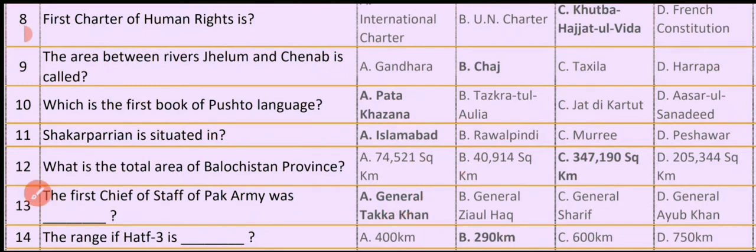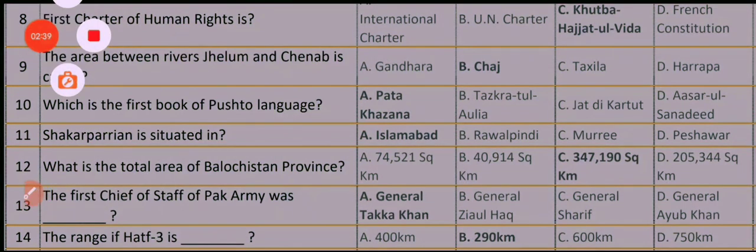Question No. 14. The range of Haft-3 is Option A. 400 kilometers Option B. 290 kilometers Option C. 600 kilometers Option D. 750 kilometers. So the correct option is Option B: 290 kilometers. So dear students, this is our today's lecture. We will meet in a new video tomorrow. Stay connected, Allah hafiz.